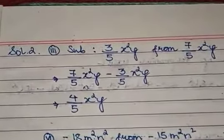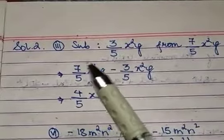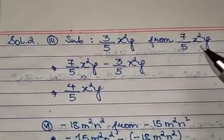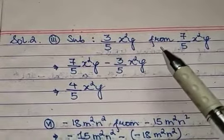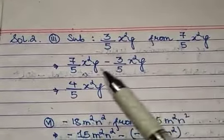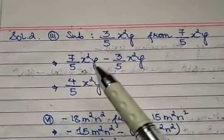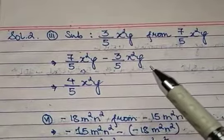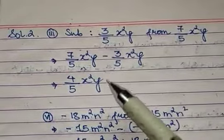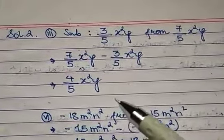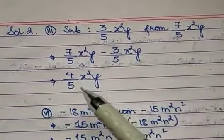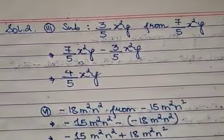For subtraction, question 2-3: subtract 3/5 x²y from 7/5 x²y. When we see 'from,' the second term comes first. So: 7/5 x²y − 3/5 x²y. The variables are the same — like terms — so 7 − 3 = 4, giving 4/5 x²y.